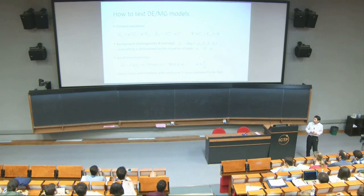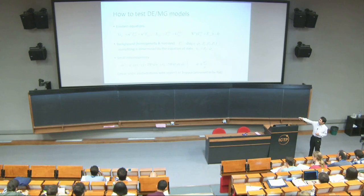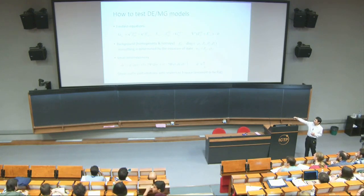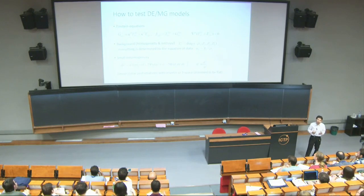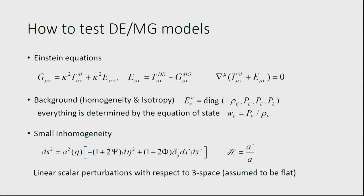In order to do that, I want to specify my model. I want to have a gravitational equation — the Einstein equations. T_μν^m is the energy-momentum tensor for normal matter, including baryons and cold dark matter. I introduce a new tensor E_μν, which can be either dark energy or a modification of gravity. This E_μν describes either modification of gravity on the left-hand side or new matter on the right-hand side. The only requirement, due to the Bianchi identity, is that the total energy-momentum tensor of matter plus this new tensor must be conserved.